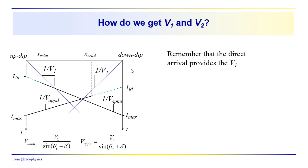Also remember that V1 in these relationships is information we get from the direct arrival. We'll see a direct arrival with the source in the up-dip location and one with the source in the down-dip location. We can determine these velocities and assess how isotropic the upper medium is. We might want to take an average of those two V1 values to account for measurement errors. So we get the apparent velocities and V1 from the basic collected data.